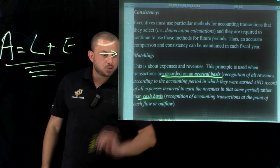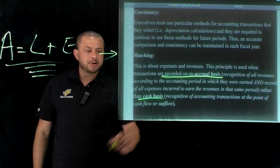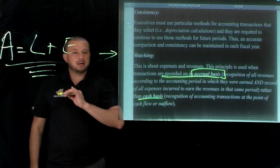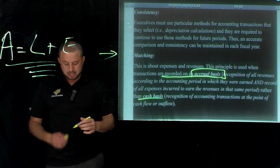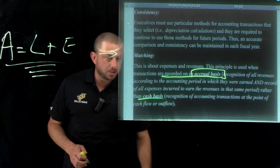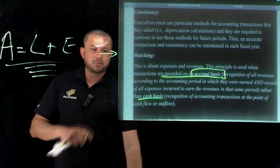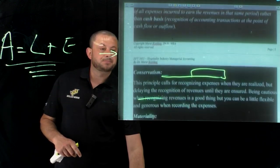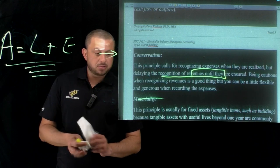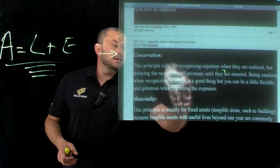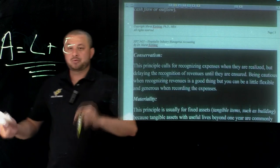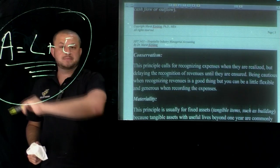We are not using cash basis anymore. Under GAAP, accounting is based on accrual basis. That's what we're going to use — this is one of the most important principles in the accounting equation.